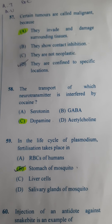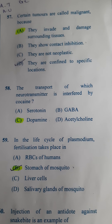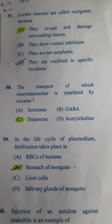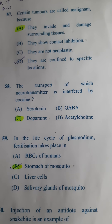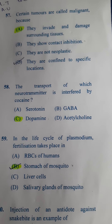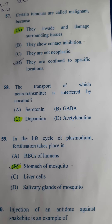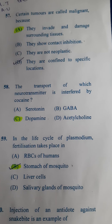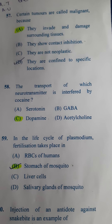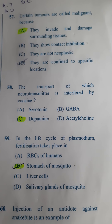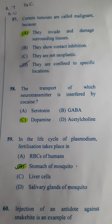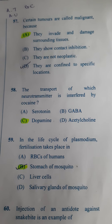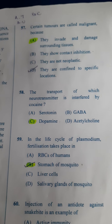Next one: Certain tumors are called malignant. There are two types of tumor — benign and malignant. Benign are restricted to the particular area, but malignant tumors invade other parts of the body and damage other cells. So the answer here is A.